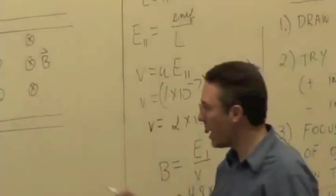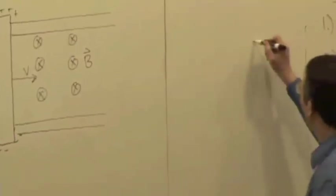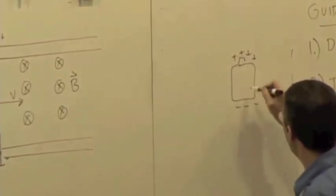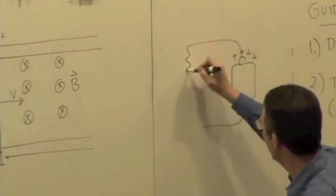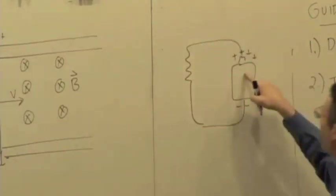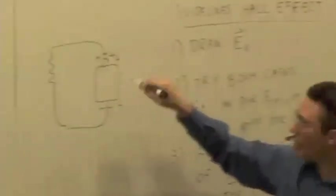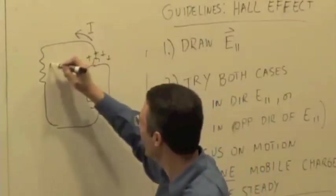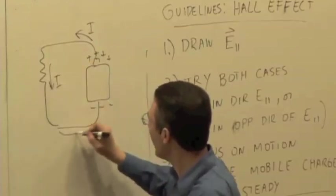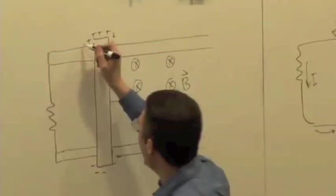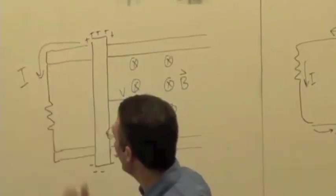If you redraw the circuit, you have a positively charged terminal of the battery here and a negatively charged terminal here, connected to a resistor. Conventional current flows counterclockwise — capital I comes out of the positive terminal. By the same reasoning, we should have a conventional current flowing counterclockwise through this circuit.